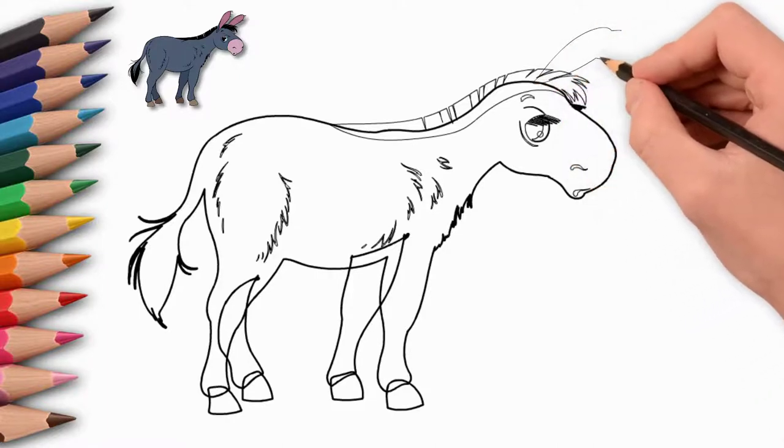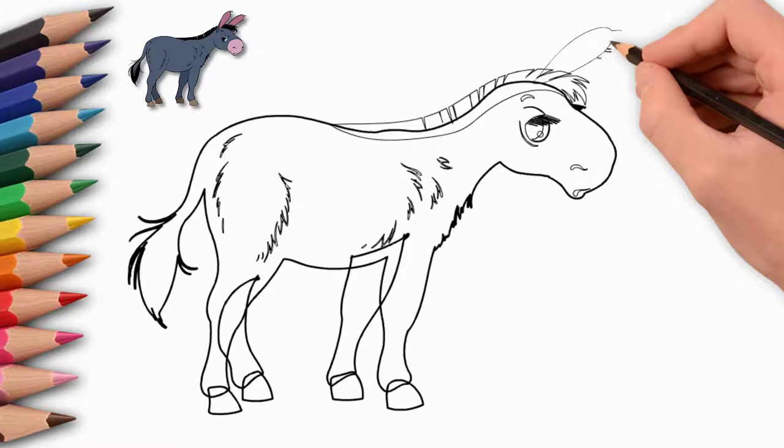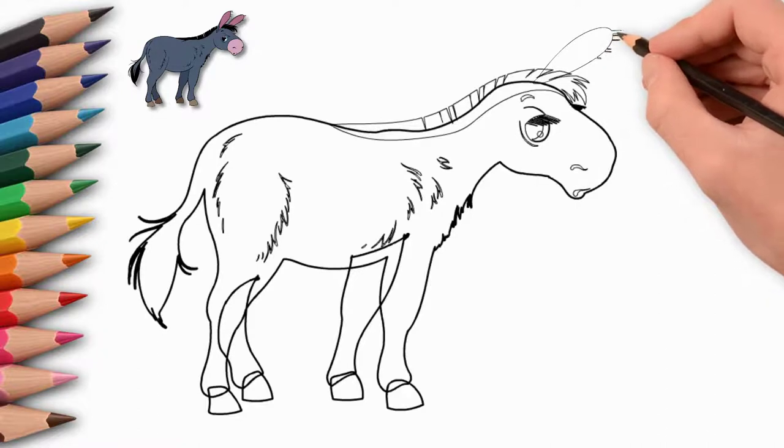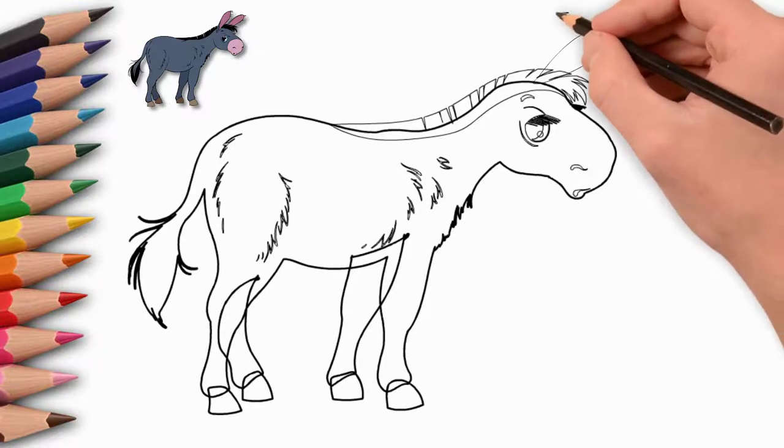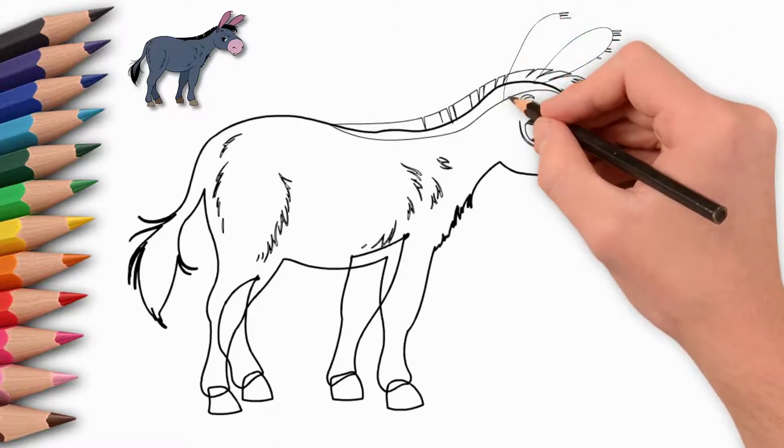And the other ear is partially hidden behind the donkey's head. And now let's draw the field on which the donkey stands. We draw hills. And on these hills we will draw the rural landscape.